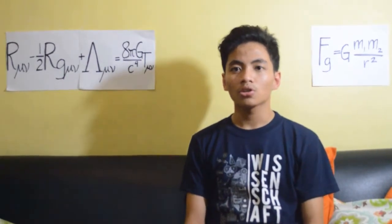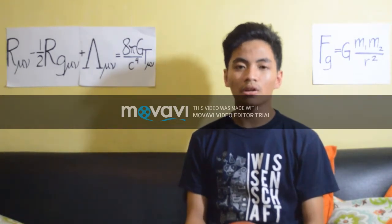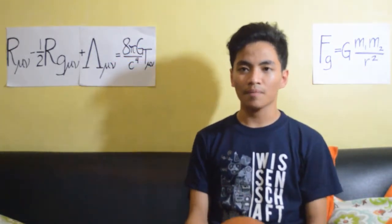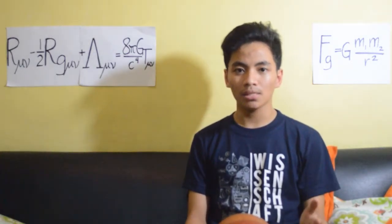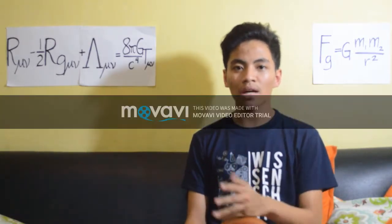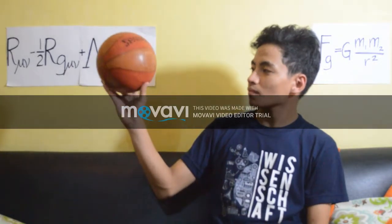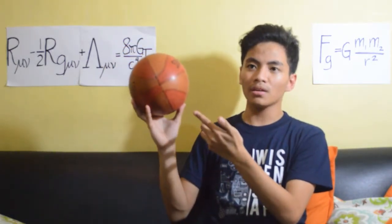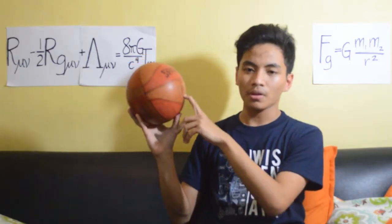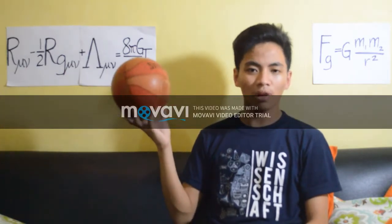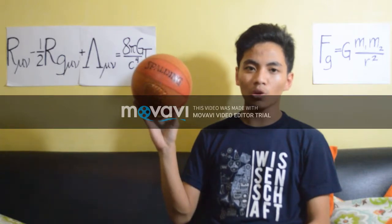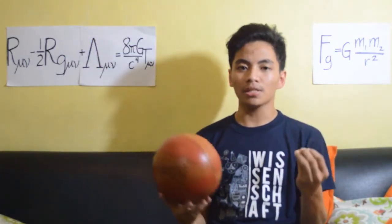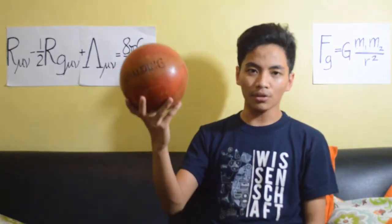Now let's talk about general relativity. The general theory of relativity is Einstein's theory of gravity that describes how the Sun — represented by this ball — curves the fabric of space and time. Space-time is an intertwined concept of space, or spatial terms, with time, which is temporal. Imagine the Sun with planets like Earth orbiting around it. Einstein said gravity is what works when the Sun curves the fabric of space and time, and planetary orbits are the consequence of the Sun making a curve in space-time.